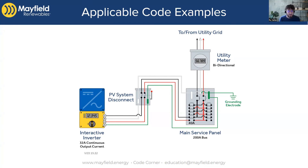One thing to keep in mind: if your math doesn't work out and your inverter continuous output current is a little too high to make a load-side connection, but you don't have the ability to do an easy supply-side connection, one option to consider is derating the main breaker. Of course, you need the client's approval and should check the loads to make sure that's okay. In a situation like this 200-amp panel, you could possibly derate it down to 175 amps to create more headroom, making the math work so you can put a breaker down at the bottom of the bus.